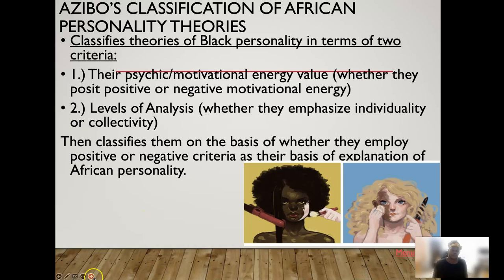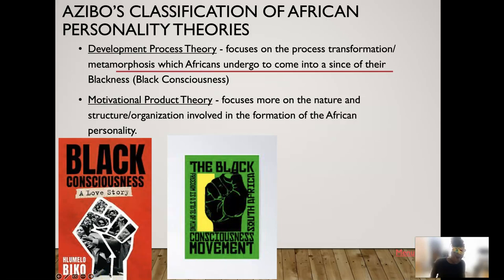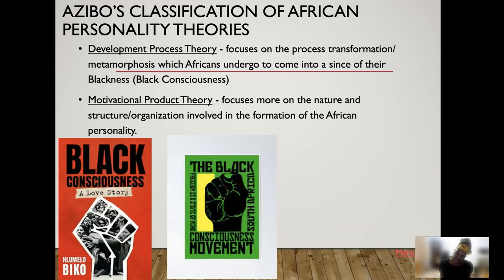In the old days, African personality would often be based on a negative motivational theoretical perspective. Azibo identified two components: the developmental process theory, which focuses on the transformation — a metamorphosis — which Africans undergo to come into their sense of blackness or Black consciousness; and secondarily, the motivational product theory, which focuses more on the nature, structure, and organization involved in the formation of the African personality.